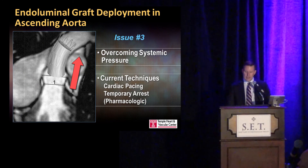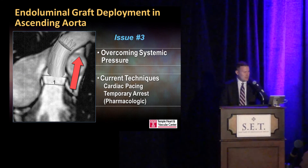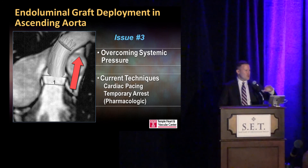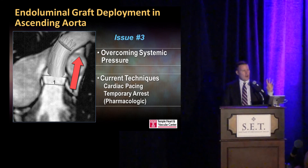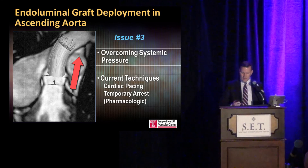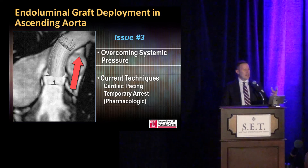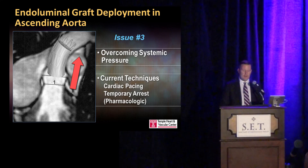The next issue is accuracy of deployment. Coming around from the transfemoral approach, there is a lot of motion and whip with the catheter, as well as overcoming systemic pressure. As mentioned, there can be rapid ventricular pacing to temporarily cease cardiac output, as well as other pharmacologic maneuvers to help. These may be needed a little bit more so in the ascending aorta than in the descending thoracic aorta and aortic arch.